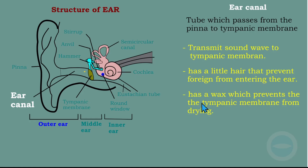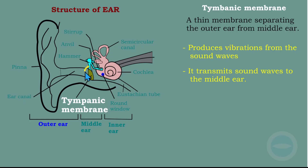The ear canal also has wax which prevents the tympanic membrane from drying, keeping it moist so it can vibrate. The tympanic membrane is a thin membrane separating the outer ear from the middle ear. Its functions are to produce vibration from the sound waves — as the sound waves enter and hit this membrane, it starts to vibrate — and to transmit those sound waves to the middle ear.